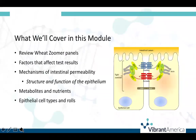We'll start out by reviewing the Wheat Zoomer panels and markers briefly in case it has been some time since you've watched module 1. Then we'll discuss some factors that may affect your patient's test results. We'll spend the majority of this module discussing the mechanisms behind intestinal permeability and how the intestinal epithelial barrier plays a role in nutrient absorption, interacts with the intestinal microbiome, and its role in inflammation.